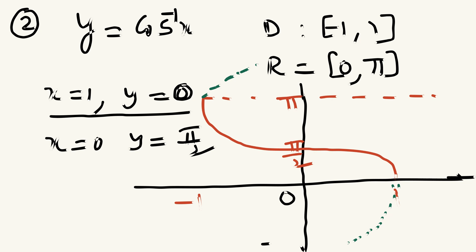The second one — I would like to bring the graph of y = cos⁻¹(x). The domain of this function is the same as usual: -1 to 1, so minimum is -1 and maximum is +1. The range of this function is [0, π]. So x belongs to [-1, 1] and y belongs to [0, π].